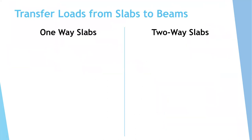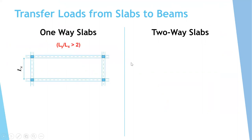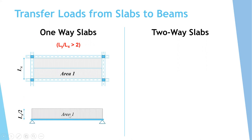To transfer loads from slabs to beams, we need to differentiate between one-way slabs and two-way slabs. In one-way slabs, the long span divided by the short span is greater than two. In this case, the load goes in the short direction to the two long beams and is divided into two uniform loads. The height here is the short span divided by two. The uniform load equals Lx over 2 multiplied by n (load in kN/m²), giving kN/m. For a concentrated load, multiply the area by the load in kN/m².